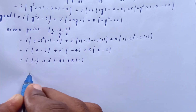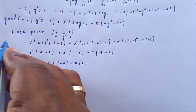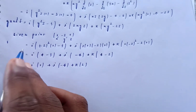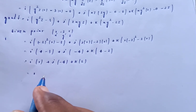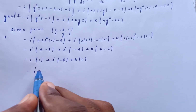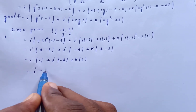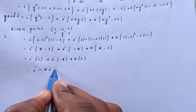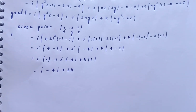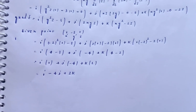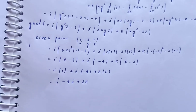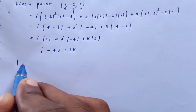So grad F1 at (1, -2, 1) = i(1) + j(-4) + k(2) = i - 4j + 2k.